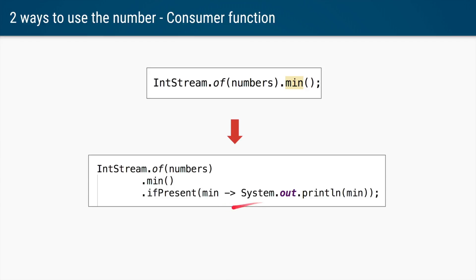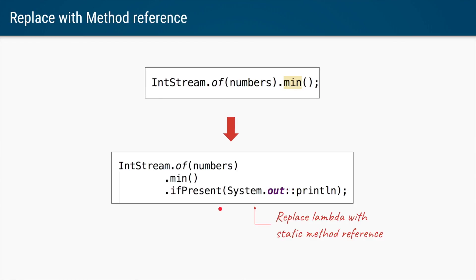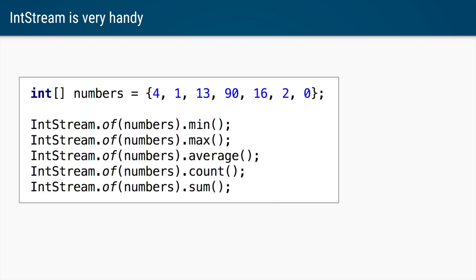In that case we get the value into a variable called min and pass it to a function. This is a simple lambda which we can replace with a method reference — so instead of a lambda you can say System.out::println. Very simply: you created a stream of numbers, asked it to find the minimum, and said that if that minimum is present, pass it to System.out.